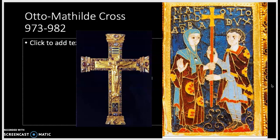Matilda is the abbess of the abbey in Essen, which was a really powerful convent in the Ottonian period. Her brother is Otto I, who is the duke of Swabia and Bavaria. They were the grandchildren of the emperor Otto I, and their uncle is Otto II — so Otto I and Otto II are both emperors. Matilda actually became abbess in 973, which gives us the earliest possible date for this work, and her brother died in 982, so we're looking at that time frame.